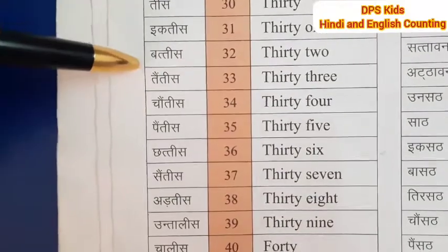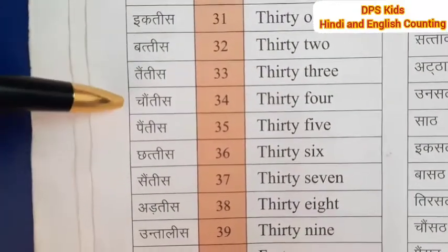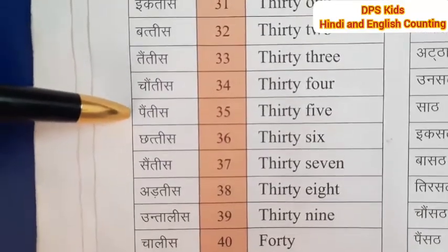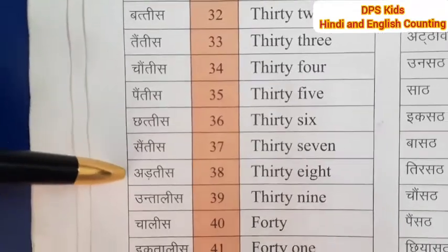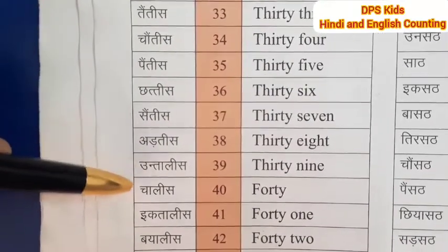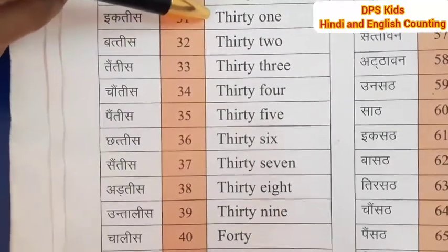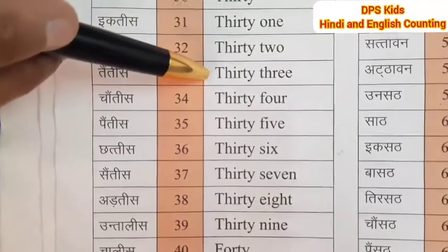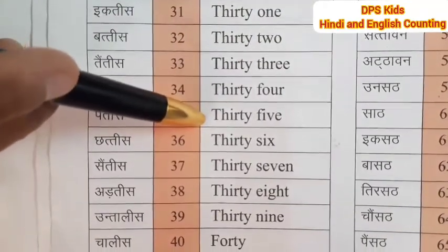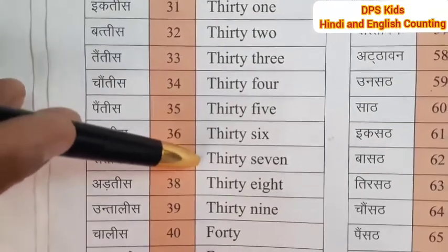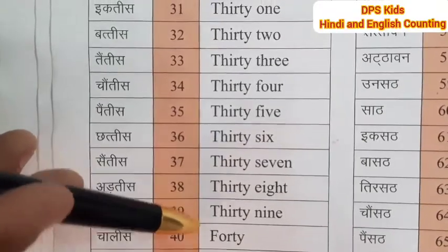31, 32, 33, 34, 35. Now again: 31, 32, 33, 34, 35, 36, 37, 38, 39, 40.